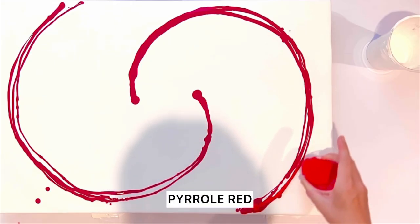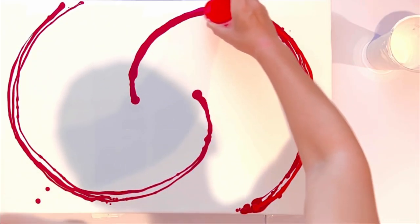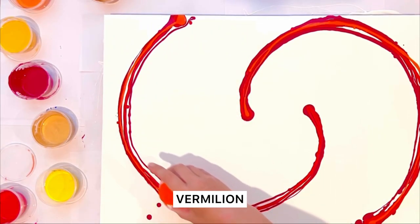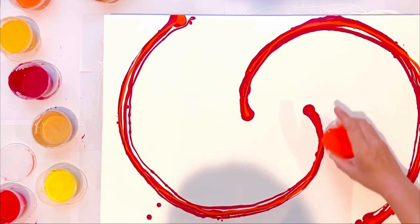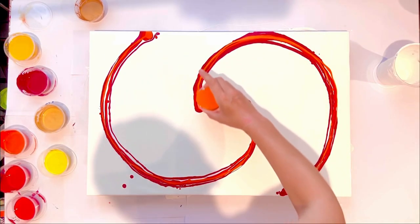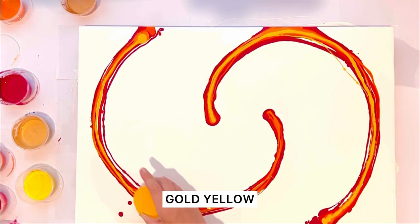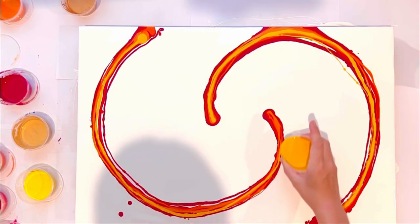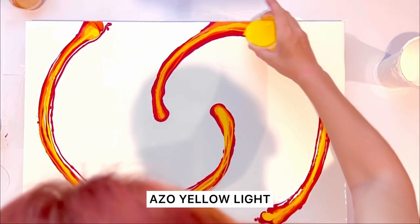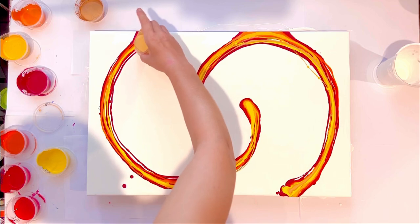And this is spiral red, vermilion, azo orange, gold yellow, azo yellow light, and light gold.